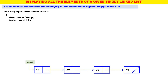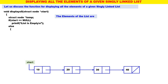We will declare a temporary pointer. If start is equal to null — when there is no linked list — just display a message: list is empty. That's all, we cannot do anything. When start is equal to null, the list is empty. Otherwise, in the else part, the elements of the list are — we will display that message. Print: the elements of the list are.